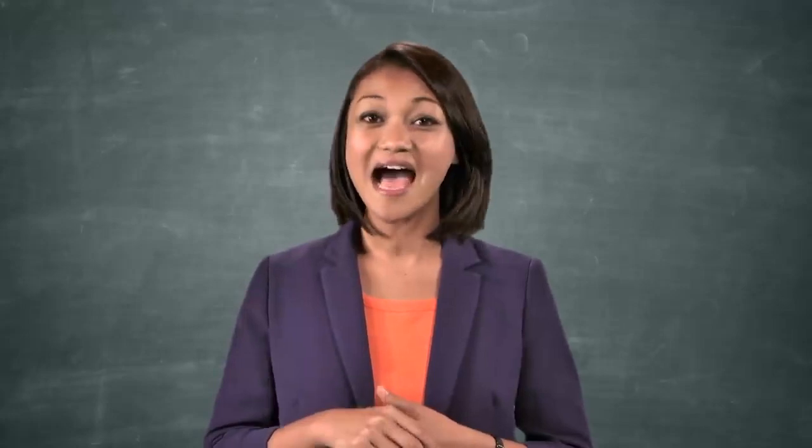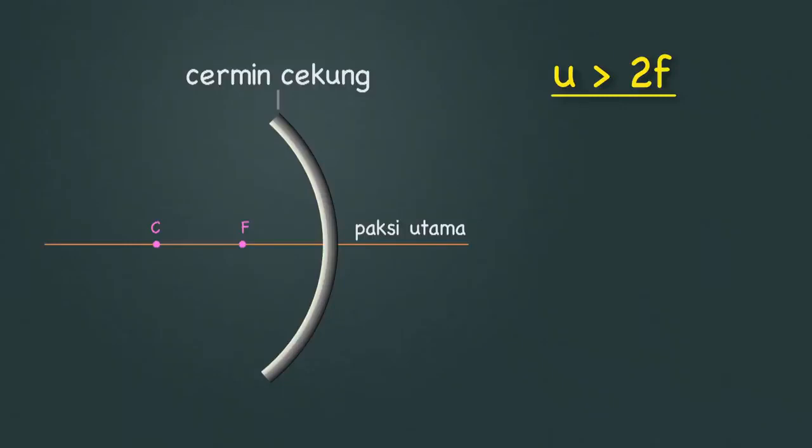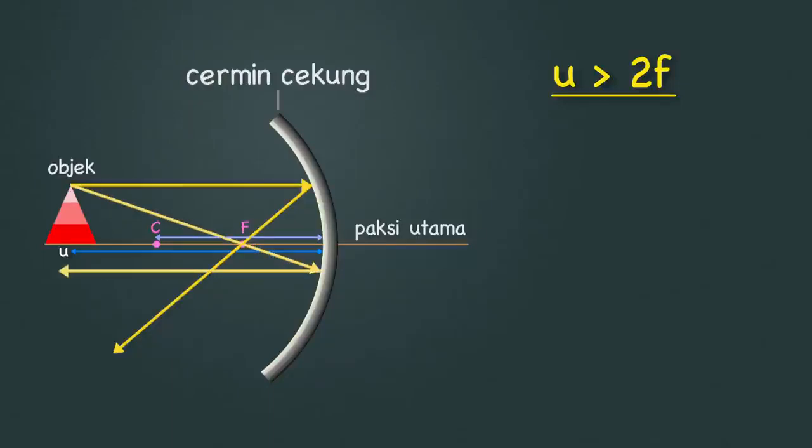Mari pula kita belajar cara-cara melukis imej yang terbentuk pada sebuah cermin cekong. Anda hanya perlu melukis dua daripada tiga rajah sinar tersebut untuk menunjukkan kedudukan imej pada cermin cekong. Ambil pensel dan kertas dan ikut arahan saya. Lukis situasi berikut di mana objek terletak melebihi titik C atau pada jarak objek U lebih besar daripada dua F. Bermula daripada objek, lukiskan semula rajah sinar satu yang telah kita pelajari sebentar tadi. Kemudian kita lukis pula rajah sinar yang kedua seperti berikut. Anda nampak tak sekarang kedua-dua sinar pantulan ini bersilang pada titik berikut? Maka pada titik persilangan ini, kita akan lukis imej objek tersebut seperti berikut.